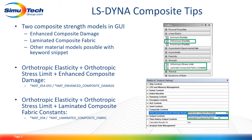There are two composite strength models available within the ANSYS LS Dyna GUI. One is called Enhanced Composite Damage, the other is Laminated Composite Fabric. There are other material models possible within LS Dyna, but those are all going to require a keyword snippet and we won't be talking about them today.